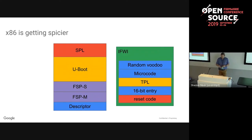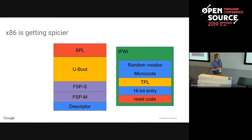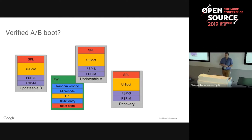x86 is getting more interesting because there's a firmware package read by a little microcontroller in the SoC containing a lot of interesting stuff - notably a TPL image for initial boot, then SPL, then U-Boot. There's a descriptor that tells everything else on the system where stuff is. If you've got verified A/B boot, you have multiple of these things - A, B, recovery - and everything gets completely out of hand. That's why you need a firmware packer.